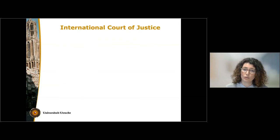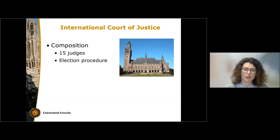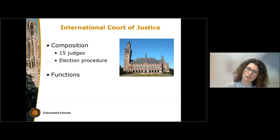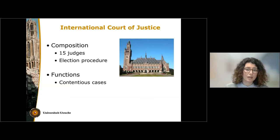The International Court of Justice is the most important international permanent court and among the oldest. It is located in The Hague at the Peace Palace. It is composed of 15 judges elected by the UN General Assembly and the Security Council on the basis of proposals by states. In contentious cases it can adopt provisional measures pending the decision on the merits, and these provisional measures are binding for the parties — as affirmed clearly by the court in the LaGrand case in 2001.